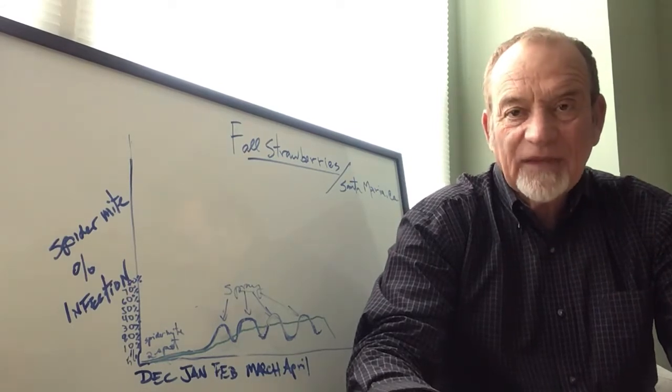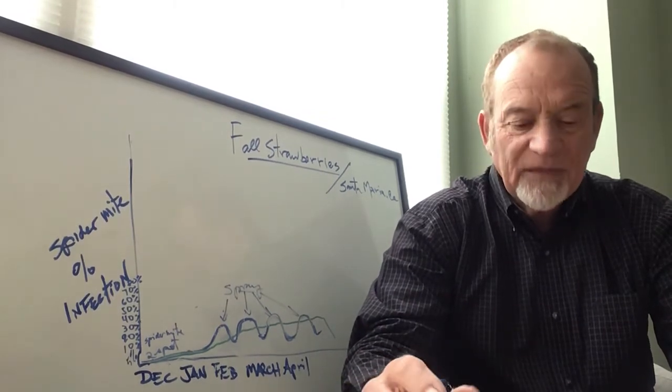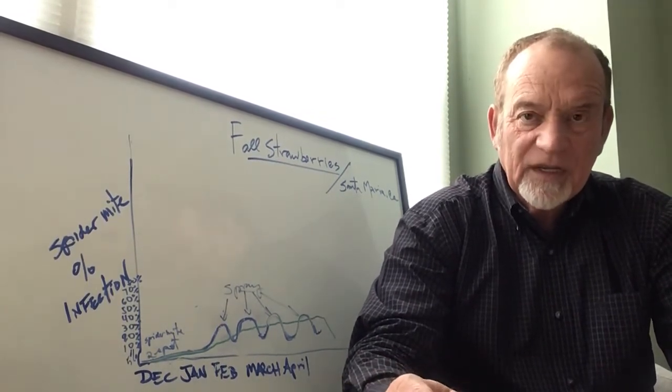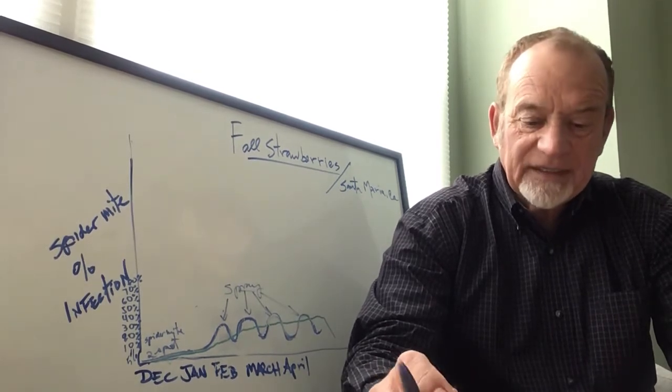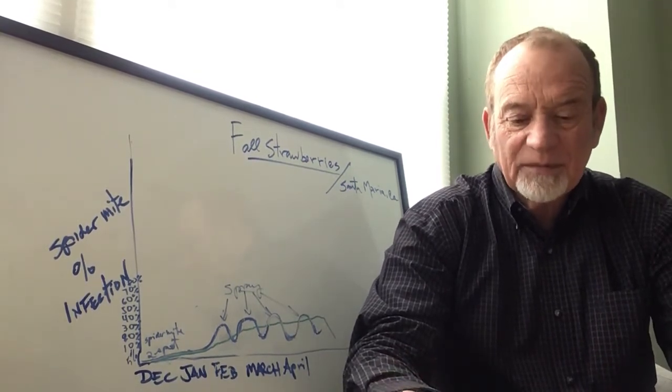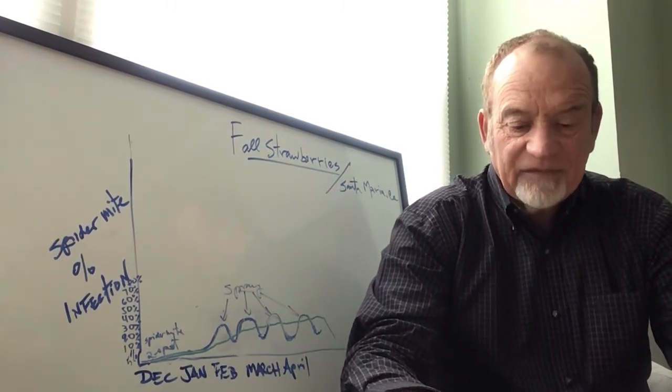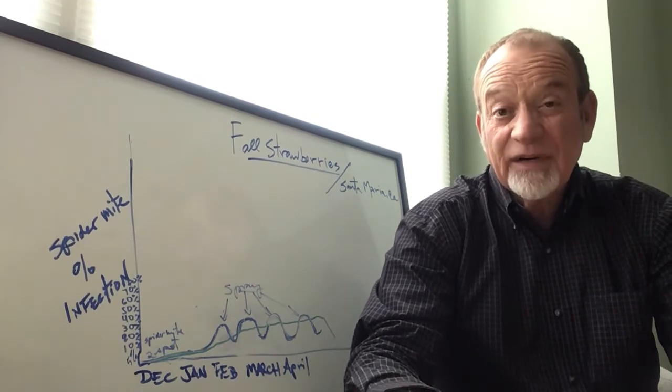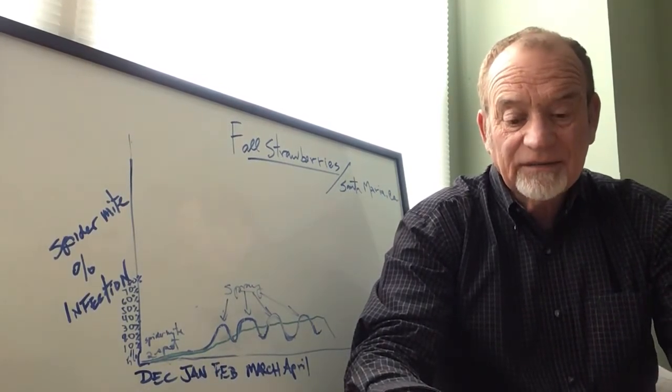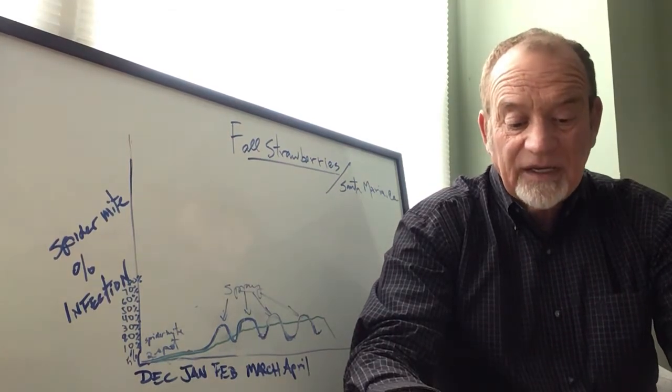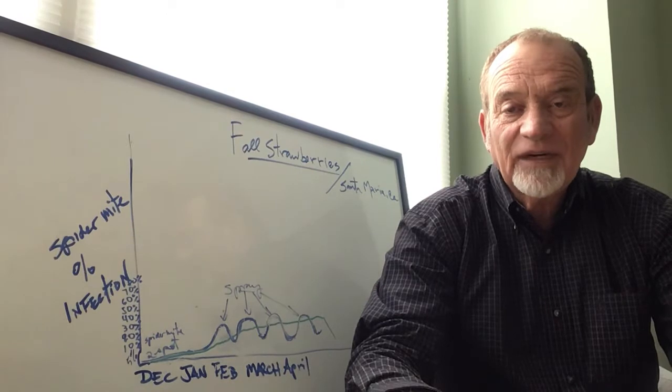I'll make a quick graphic description of the losses based on 10,000 boxes per acre yield. At 1% yield loss at $10 per box, we're looking at $1,000 losses. At 5% you're looking at $5,000 loss per acre, and at 10% loss, $10,000.